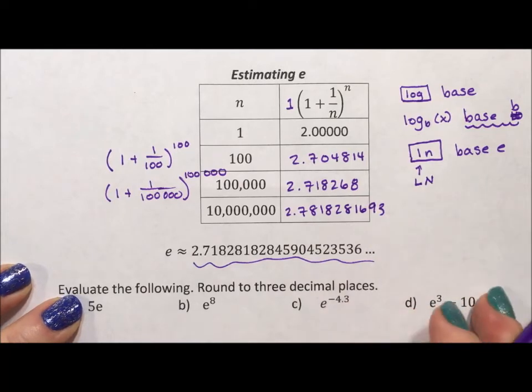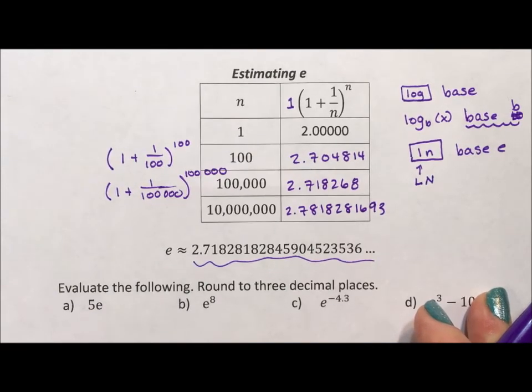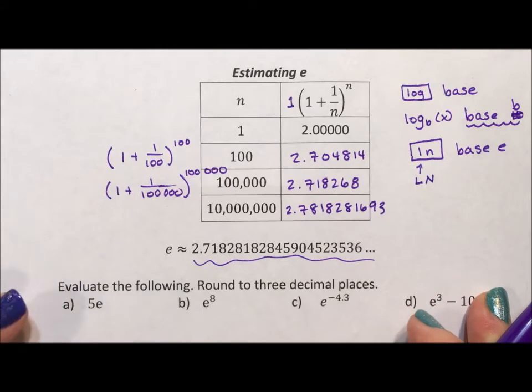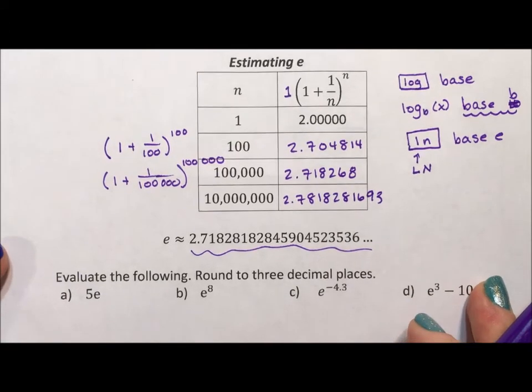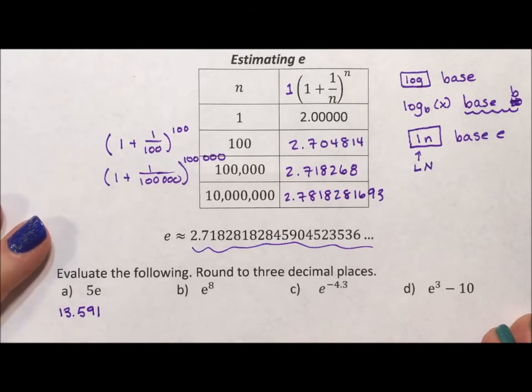There is one way to generate what e equals. So this is just playing with a calculator and seeing if we understand how to plug this number into a calculator. If we start off with putting 5e into your calculator, rounding to three decimal places, we should get 13.591. I suggest pausing and doing the other three before you see what the answers are, just to make sure you're plugging everything in correctly.